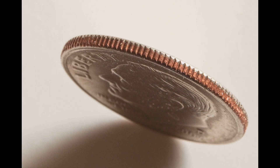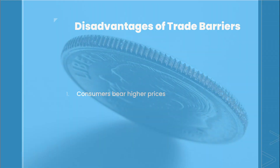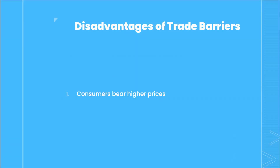But there are two sides to every coin, so let's review the disadvantages of imposing trade barriers. Firstly, domestic consumers bear the higher prices. Contrary to popular belief, tariffs increase the selling price of imported goods in the domestic market, meaning consumers have to pay more, as the majority of this tax actually falls upon the consumer, not the exporter.